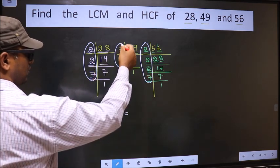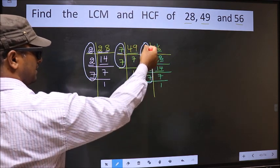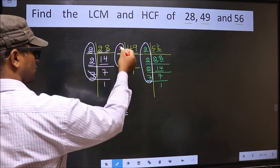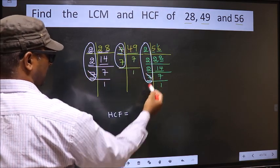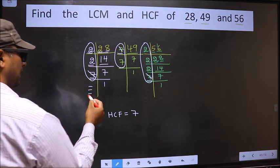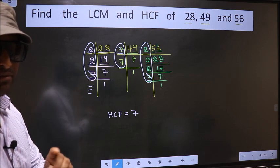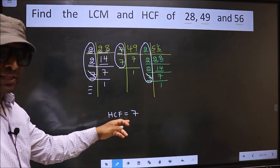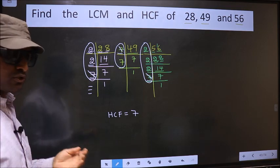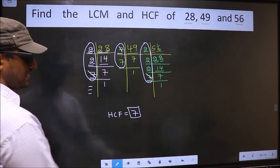Starting with the number 2. Do we have 2 here? No. No need to check in the other place. Next number 2, do we have 2 here? No. No need to check in the other place. Next number 7, do we have 7 here? Yes. Go to the next place. Do we have 7 here? Yes. So you cut 7 and write here. No more numbers have been left. Therefore, we got only one number 7 present in all the 3 places. So 7 itself is our HCF.